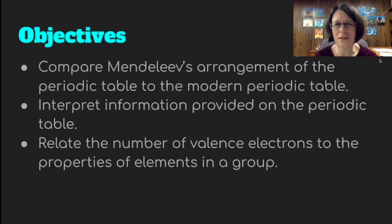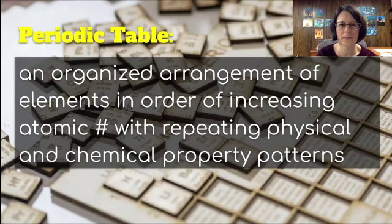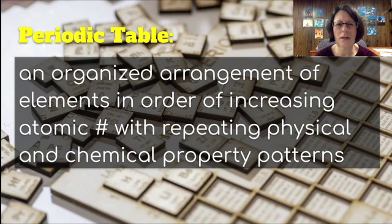Our objectives for this section are to compare Mendeleev's arrangement of the periodic table to the modern periodic table, interpret information provided on the periodic table, and to relate the number of valence electrons to the properties of elements in a group. The periodic table is an organized arrangement of elements in order of increasing atomic number with repeating physical and chemical property patterns.